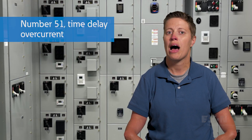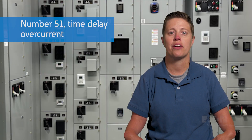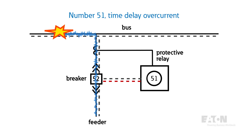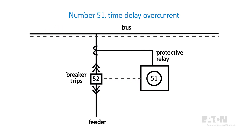Number 51, time delay overcurrent. The time delay overcurrent function sends a time-delayed trip signal based on the magnitude of measured current according to pre-programmed time delay curves available within the relay. This is the same function as the electromechanical example described earlier — a 51 function, time delay overcurrent.